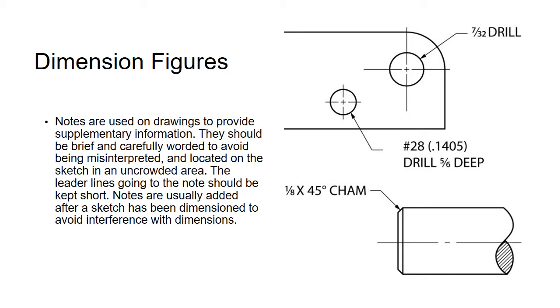Like that hole there up in the upper right hand corner where it says 7/32nds drill. So that means we don't chop it out with an arc or we don't use another method to remove the material. They want that hole drilled. Then this other one, you know, they just want it drilled 5/16ths of an inch deep. Or on the lower right hand corner it's telling you, you know, an eighth of an inch 45 degree chamfer. It's giving you an idea of what they want. So a lot of times they'll just put notes on these drawings.